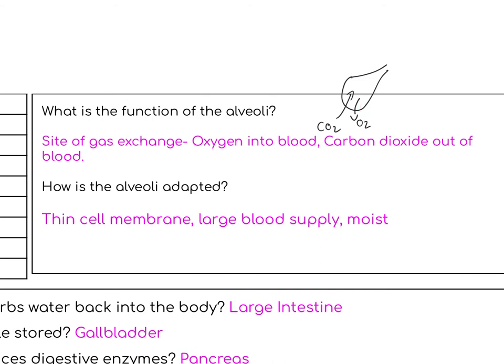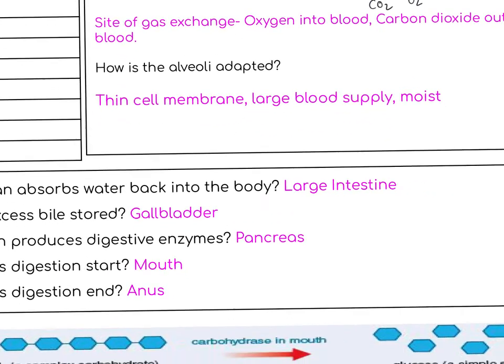Surrounded by it is a really large blood supply, so the blood can then take it around the body, and then it's moist for really good gas exchange as well.